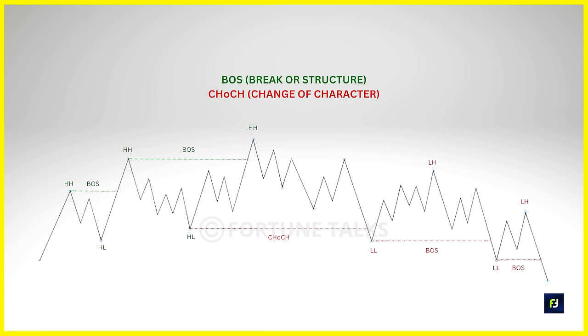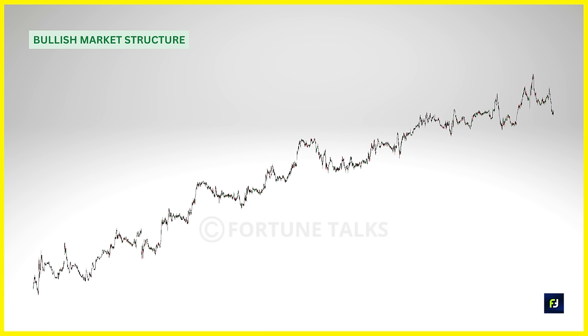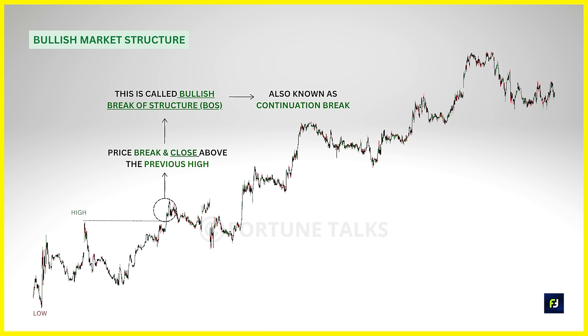Moving on, let's learn how to map the major market structure and discuss what the Break of Structure and Change of Character are. This is important because it helps you confirm the major swing points — the higher highs and higher swing lows in a major bullish market structure — from the minor swings, which act as noise in our analysis. Similarly, it helps confirm lower swing highs and lower swing lows in a bearish market structure from the minor or internal structures.